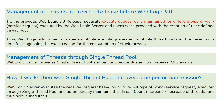From 9.0 onwards, instead of separate execute queues, you only have a single execute queue where all requests come, and threads get assigned to each request from that queue, whether internal or external. Earlier it was difficult for administrators to manage different queues with different performance tuning for internal requests, external requests, and thread pool sizes. Now from 9.0 onwards, the self-tuning thread pool is also introduced.